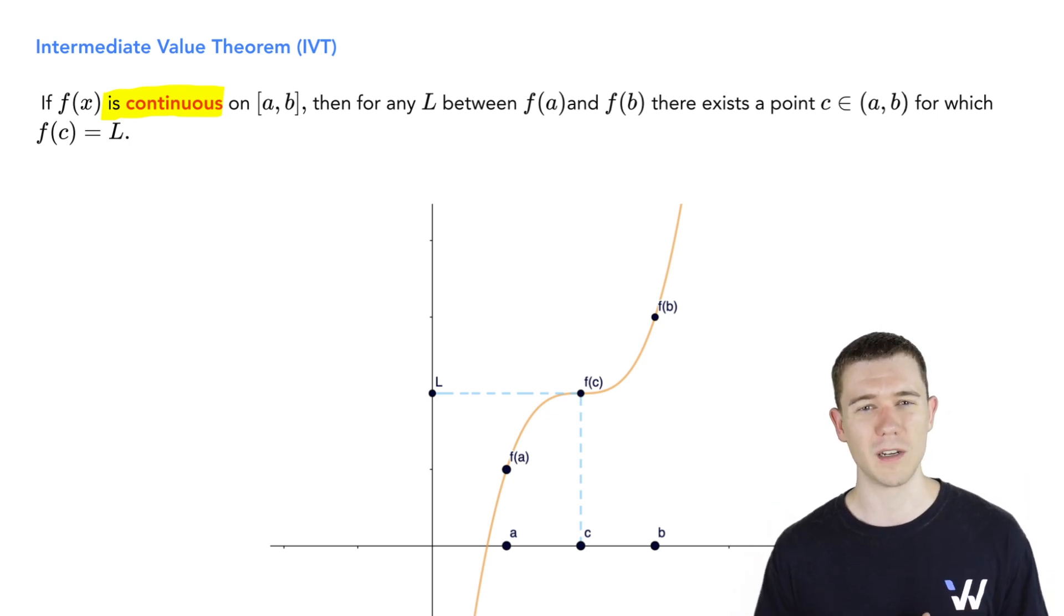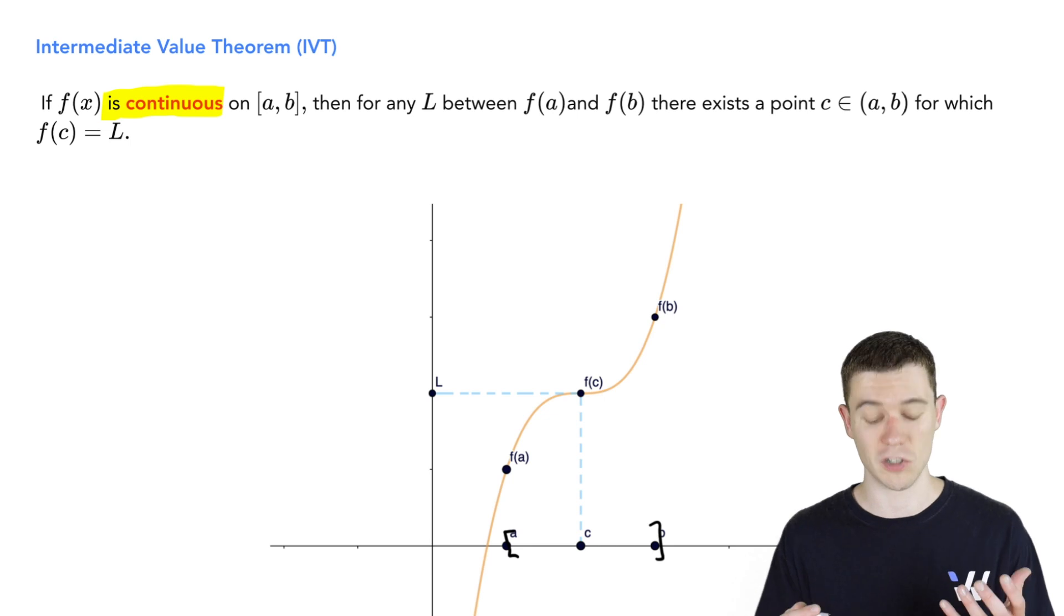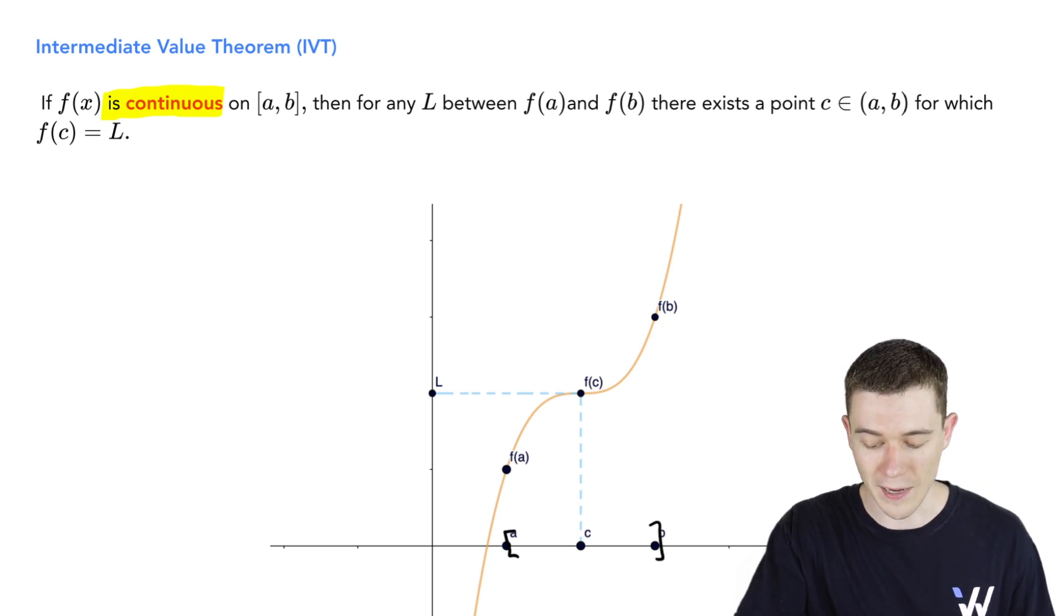That might seem a little bit confusing, but if you take a look at this picture, it's very illustrative. If you look at this function, it's continuous. There are no breaks or gaps in it, and we have our function on this interval a to b in the x direction, and you can see our function evaluated at a and b. That's f of a and f of b.